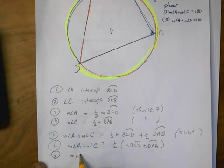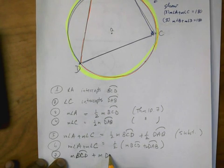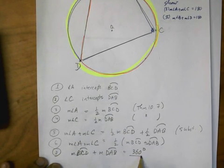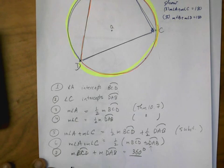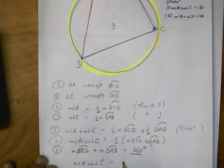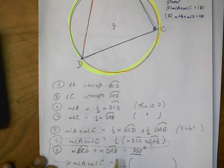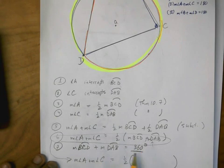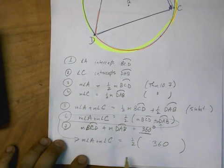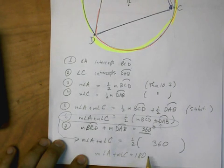So BCD plus DAB equals 360. Now we can take this 360 and substitute it in here. So using step six, we have A plus C is equal to one half—so I'm just taking this statement here and bringing it down—but instead of putting in BCD plus DAB, I can put in 360, and that gives 180. The measure of angle A plus the measure of angle C equals 180.